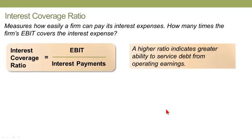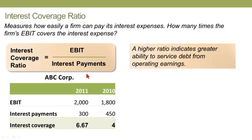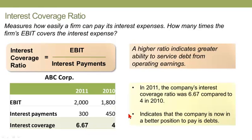The interest coverage ratio measures how easily a firm can pay its interest expense: EBIT divided by interest payments — earnings before interest and tax divided by the company's interest payments. For example, if EBIT is 2,000 and interest payments are 300, we have an interest coverage of 6.67. This indicates the company is now in a better position to pay down its debt, as it's an improvement from an interest coverage ratio of 4 — there is more EBIT available to cover the interest payments.